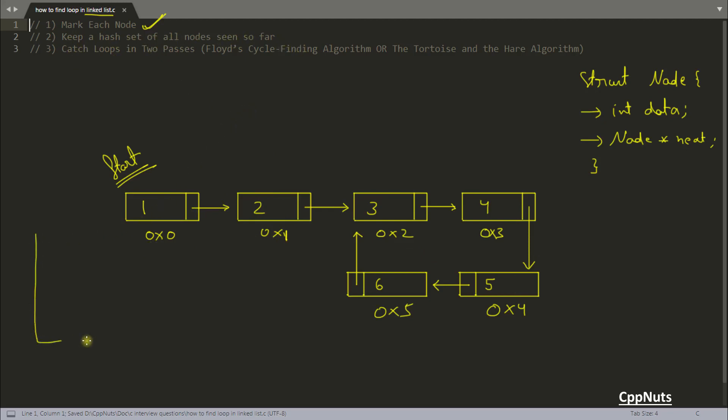Now what you will do - as it is telling create a hash set of all the nodes seen so far - it means you will be having one data structure, maybe let's call it a set. The working of this one is like you will start from here and keep on pushing this address because all your nodes will have different addresses. If you store the values at these nodes some node can have multiple similar values. So this is one and here you can have one, but these addresses will always be unique.